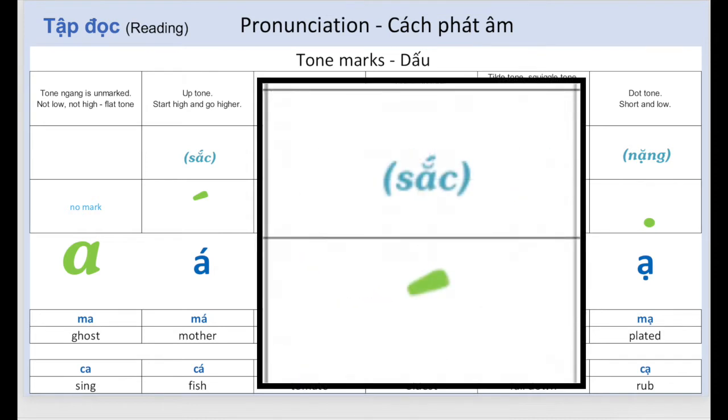Next, we have the up tone, Sắc. Start high and go higher. A. A. Examples: Má, Ka.